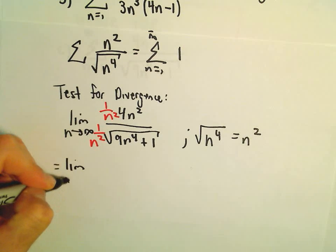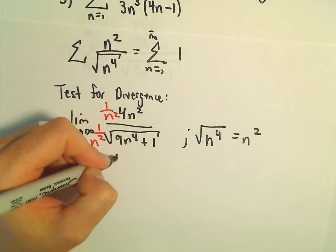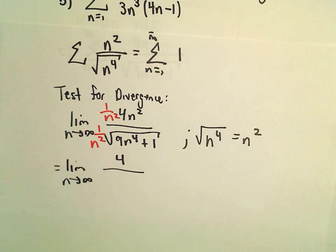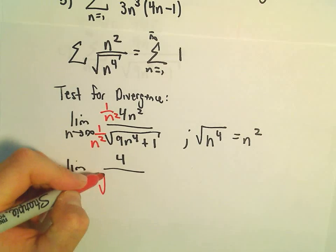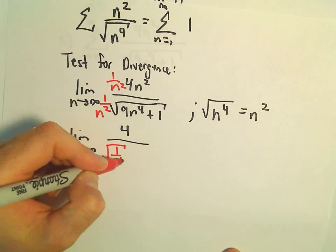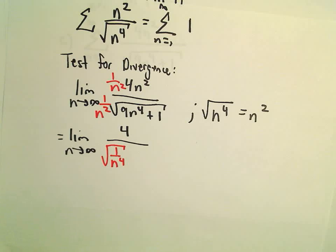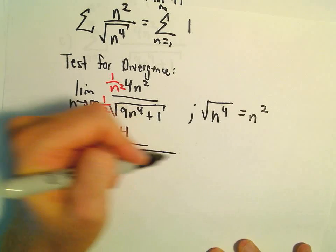Well, in the numerator, you've got the limit as n goes to infinity of just 4. We can rewrite 1 over n squared as the square root of 1 over n to the 4th. And again, that's what I'm going to distribute underneath the radical.